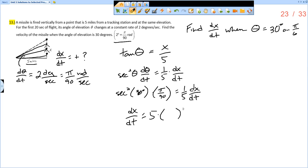So what is the secant of 30 degrees? So secant of 30. Remember, cosine is the reciprocal of secant. So the cosine of 30 degrees is root 3 over 2. So this would be 2 over root 3. And then don't forget about the squared. And then times pi over 90.